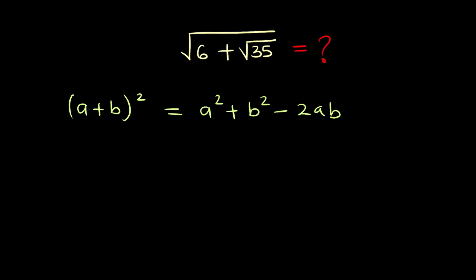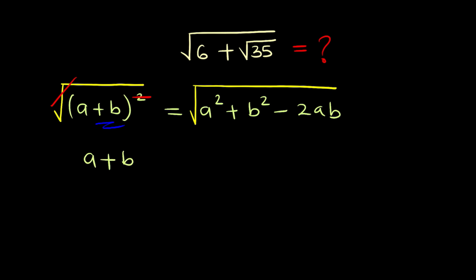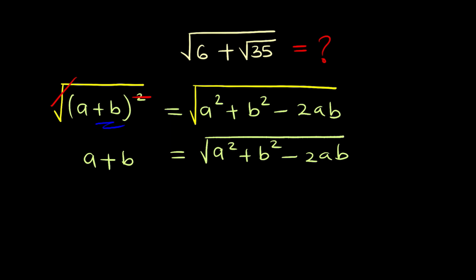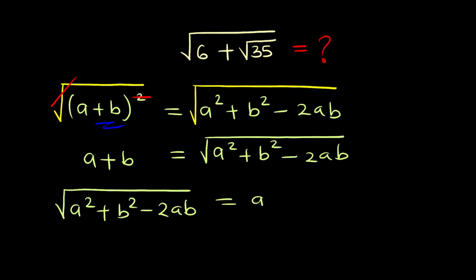Now what if we want to get back our original sum? We will then need to find the square roots of both sides, which will take care of the square and the square root, leaving us with a plus b on the left hand side. The right hand side remains the square root of a squared plus b squared minus 2ab. So we rewrite the equation as: the square root of a squared plus b squared minus 2ab is equal to a plus b.